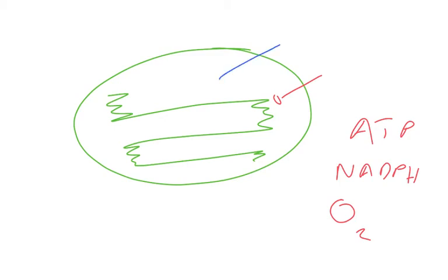Now, the light-independent reactions occur here in the stroma. The light-independent reactions, also known as the carbon cycle, take carbon dioxide and use the NADPH and the ATP to reduce that carbon dioxide, producing everything that's used in almost all living organisms. It's an amazing process.